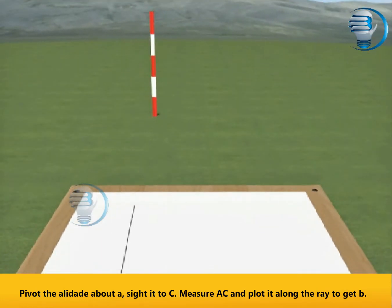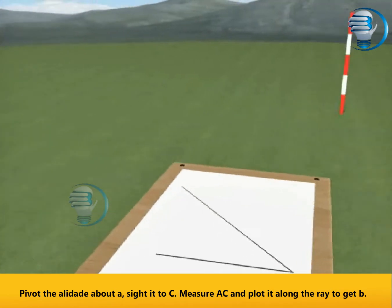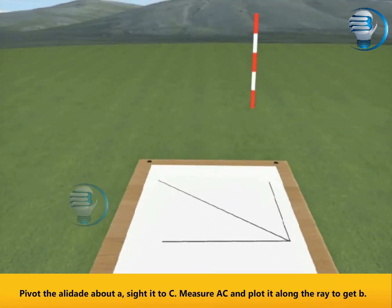Pivot the alidade about A. Sight A to C. Measure AC and plot it along the ray to get B.